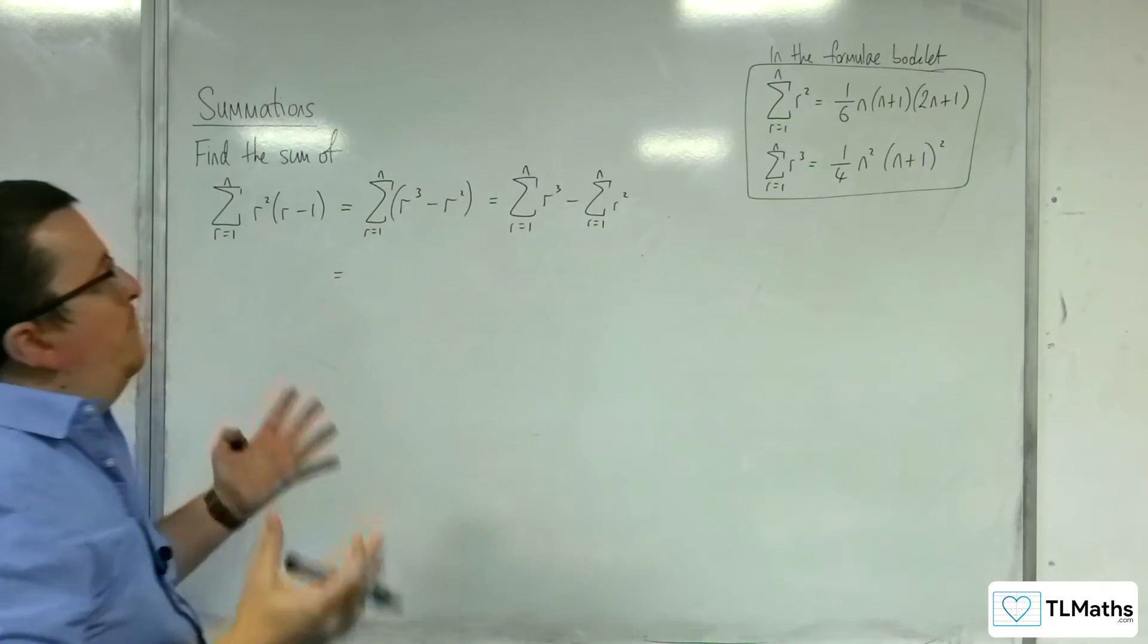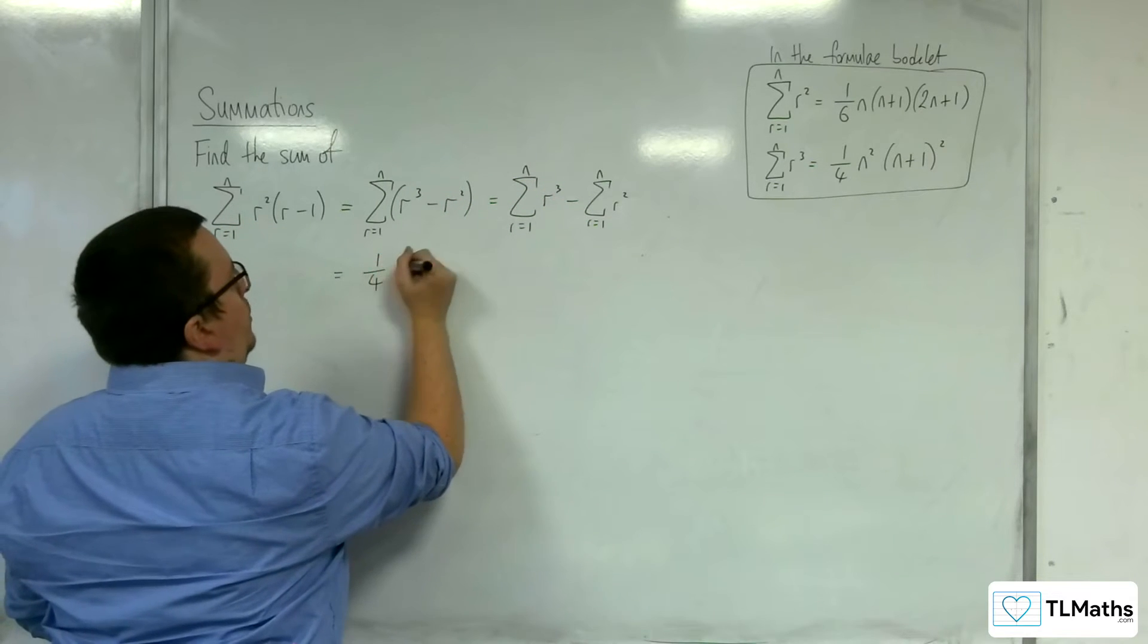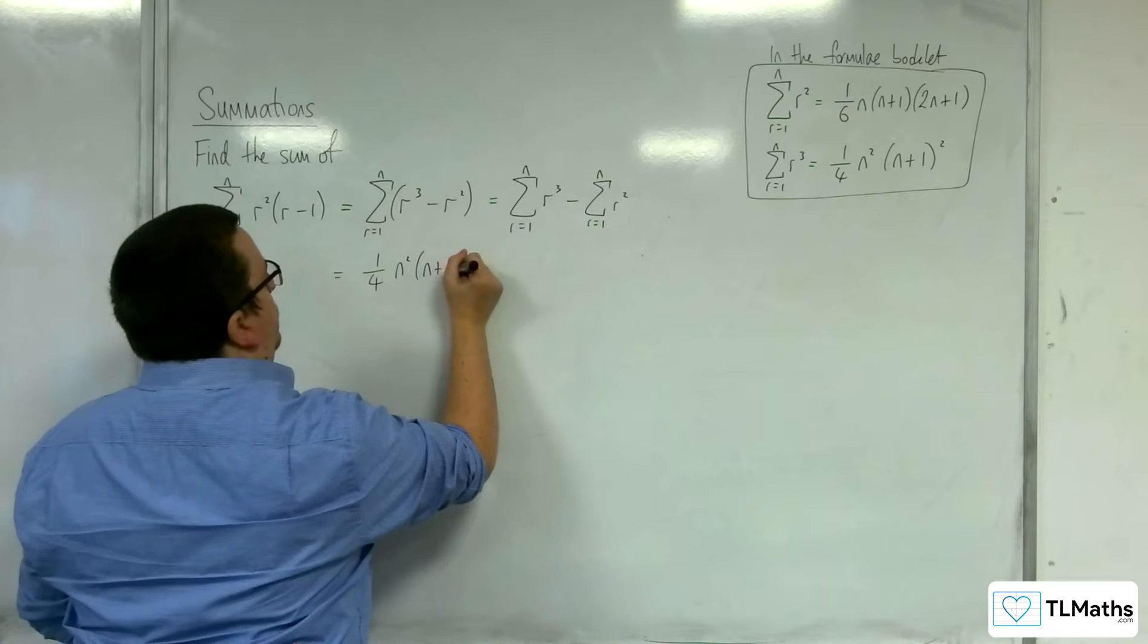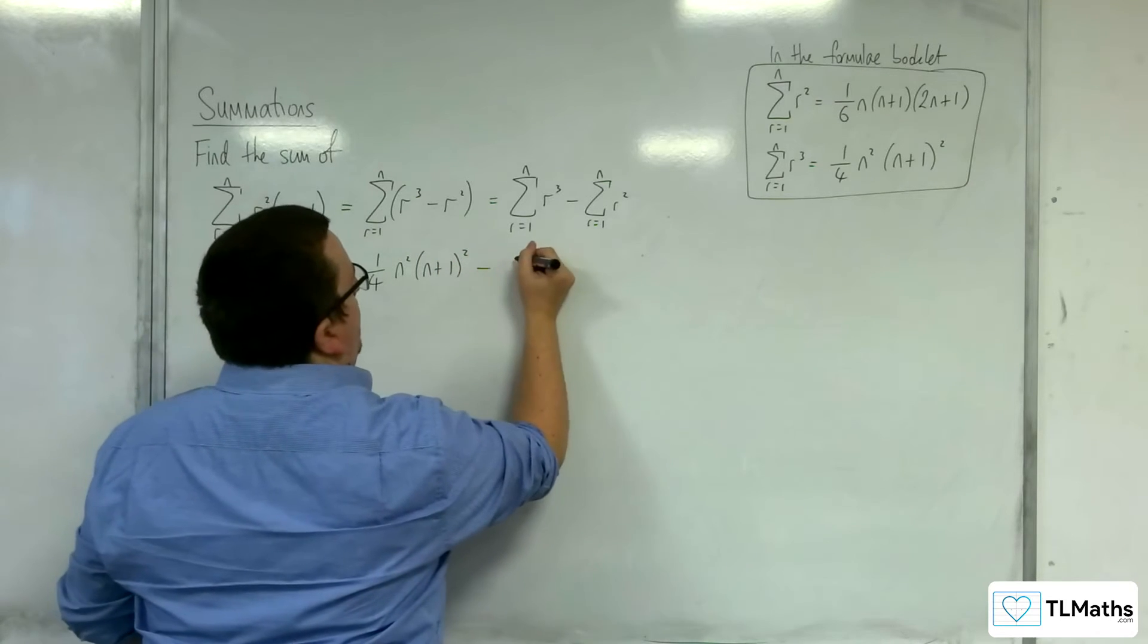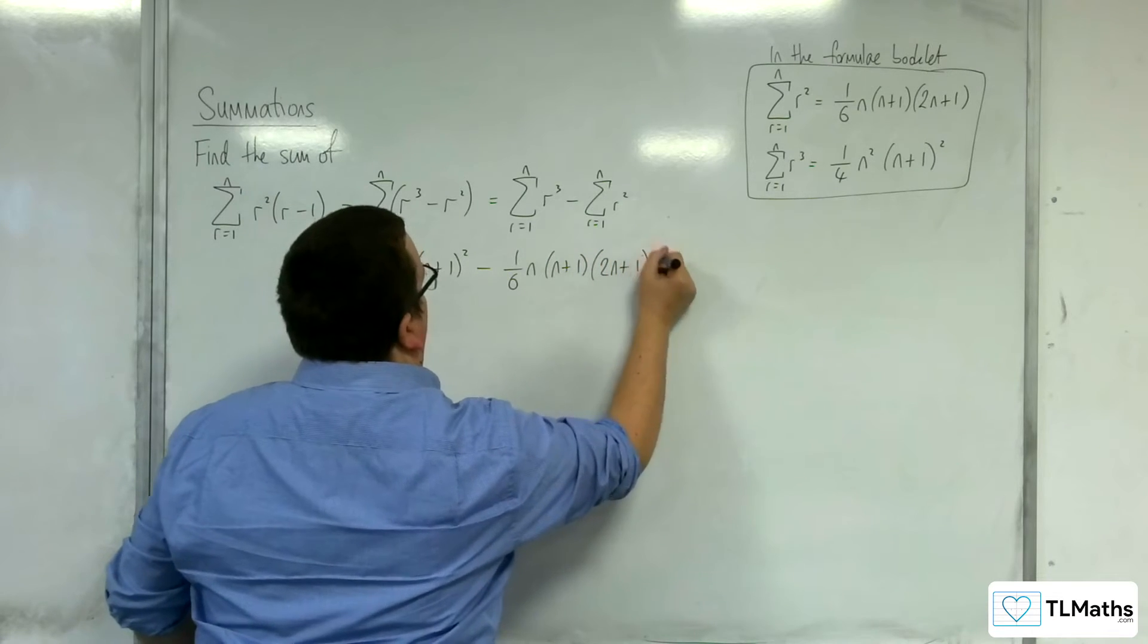Now, conveniently, both of those formulas are given to us in the formula booklet, so we can go straight in with 1 quarter n squared n plus 1 squared, take away 1 sixth n, n plus 1, 2n plus 1.